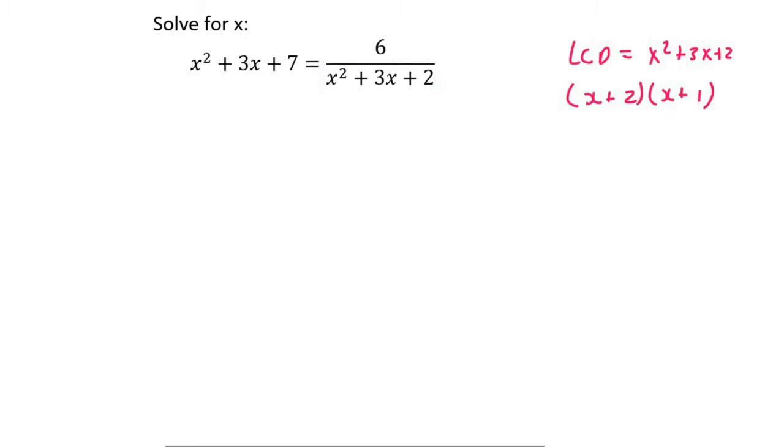All right. Now, technically, each of these are over 1, so you would need to multiply them with the common denominator. So let's just look at this first one. This first one, you would have to multiply by x plus 2 and x plus 1, and then the bottom would be x plus 2 and x plus 1. So let's just stop right there.